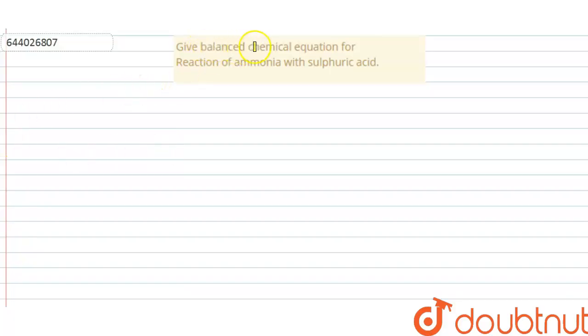The question says give the balanced chemical equation for the reaction of ammonia with sulfuric acid. Ammonia, that is NH3, and sulfuric acid, that is H2SO4. So what happens when ammonia reacts with sulfuric acid?